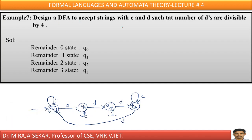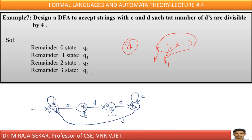Design a DFA to accept strings over {C, D} such that the number of Ds is divisible by 4. Divisible by 4 means the possible remainders are 0, 1, 2, and 3, so we need 4 states. Q0 corresponds to remainder 0, Q1 to remainder 1, Q2 to remainder 2, and Q3 to remainder 3. The first D goes to Q1, second D to Q2, third D to Q3, and the fourth D brings us back to Q0. This is a self-explanatory problem.